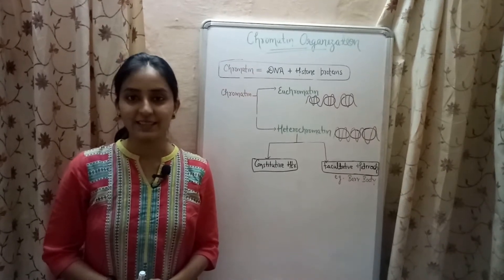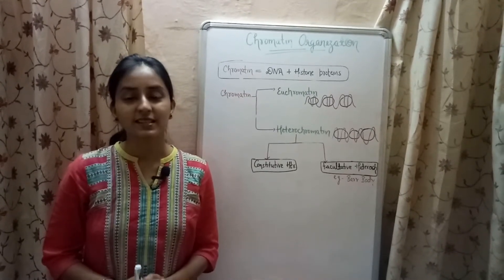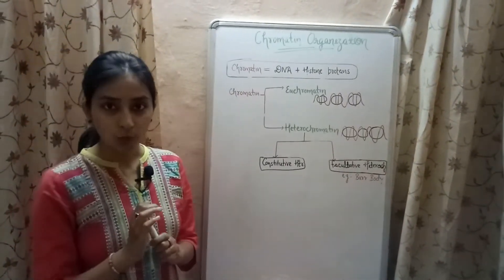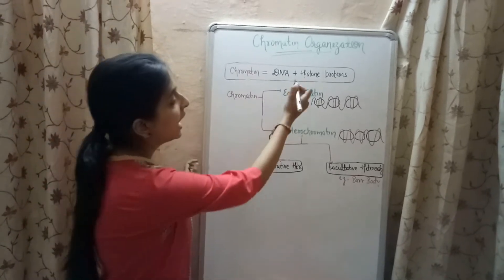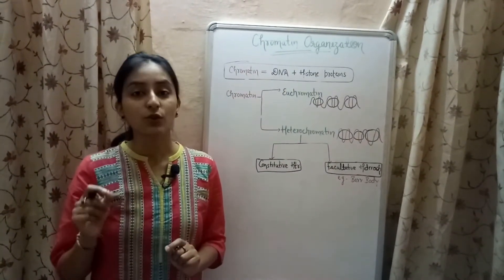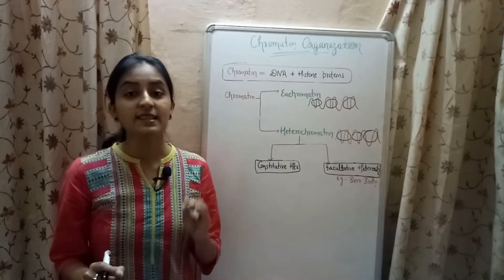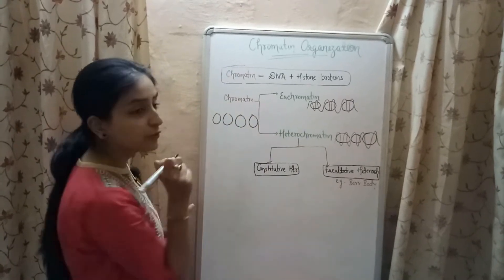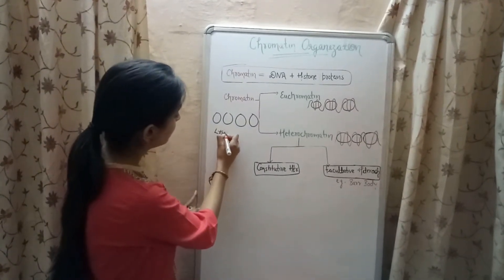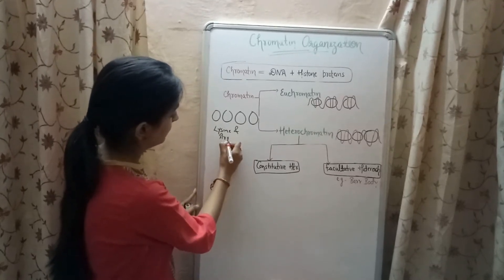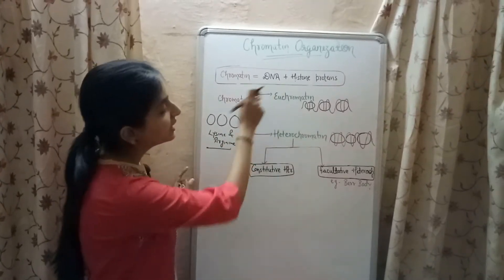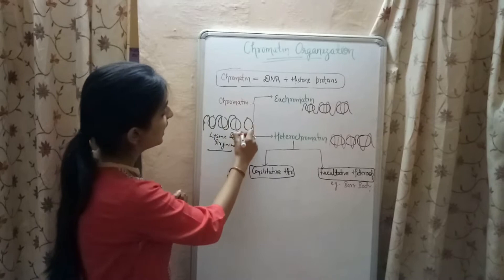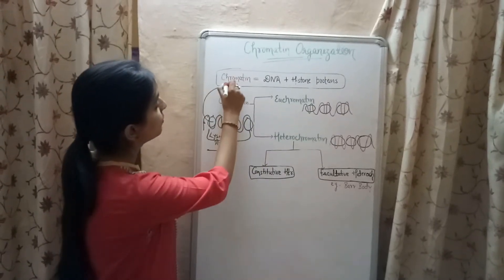Welcome to Biology at Ease. In this video I will be discussing chromatin organization. Chromatin refers to the complex formed of DNA and histone proteins present in the nucleus of a eukaryotic cell. Histone proteins are the positively charged proteins that are made up of two types of amino acids, lysine and arginine. DNA being negatively charged in nature wraps around these positively charged histone proteins and forms the structure which we call chromatin.